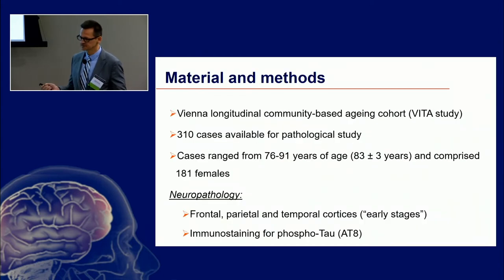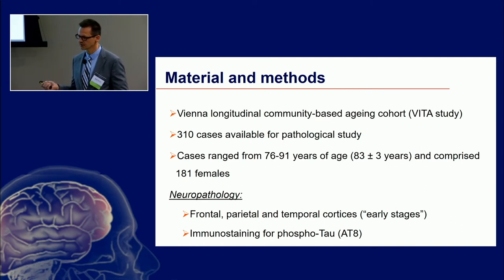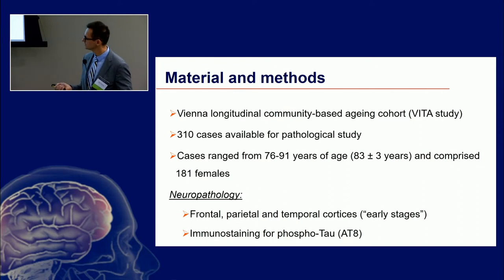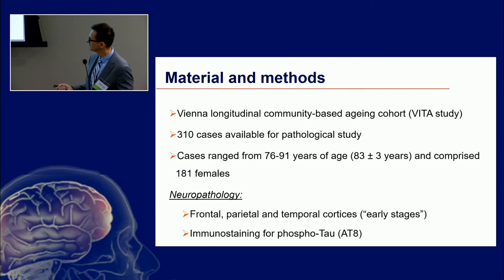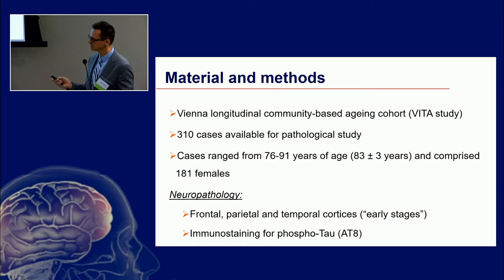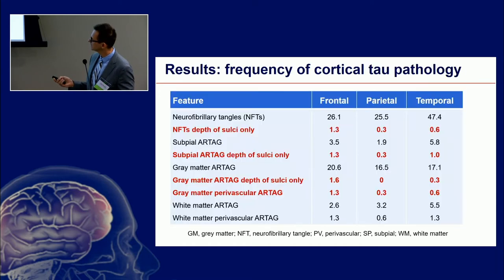The study included 310 individuals above 76 years of age, of whom about 181 were women. Based on the sequential distribution proposed by Anne McKee, we screened the frontal, parietal, and temporal cortices, using an antibody which detects only the pathological form and early disease-associated modification of tau.